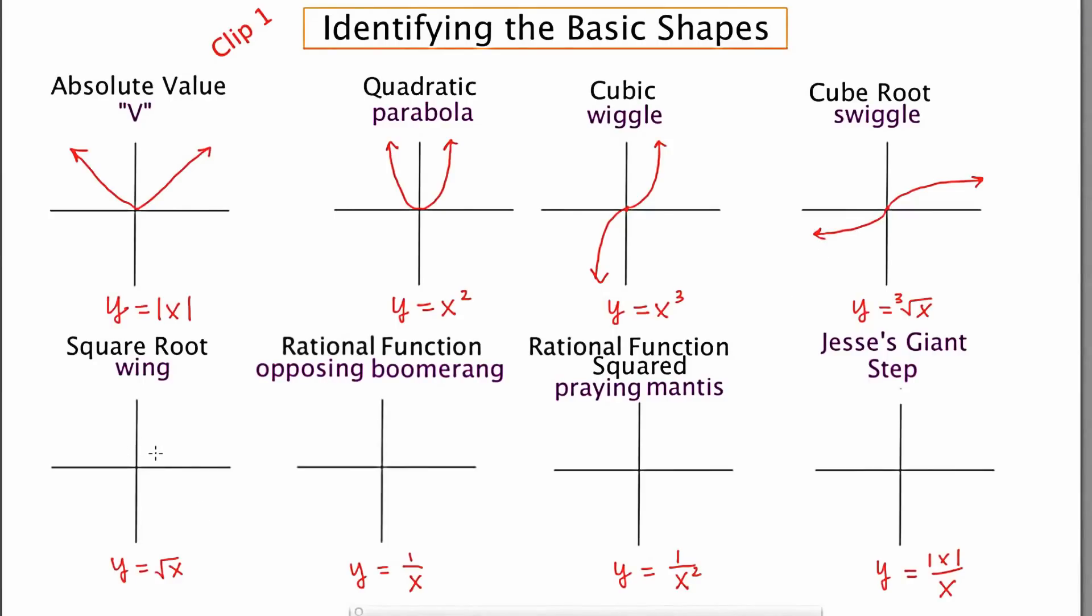The square root function we nickname a wing because it looks like the wing of a bird. Maybe when you were younger you used to draw pictures at the beach of like seagulls, and you did this. And the wing is just one side of that.